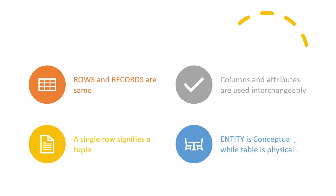You can use columns and attributes interchangeably. A single row is also known as a tuple, and an entity is conceptual — it does not exist — while the real data is physically stored in a database object named table.